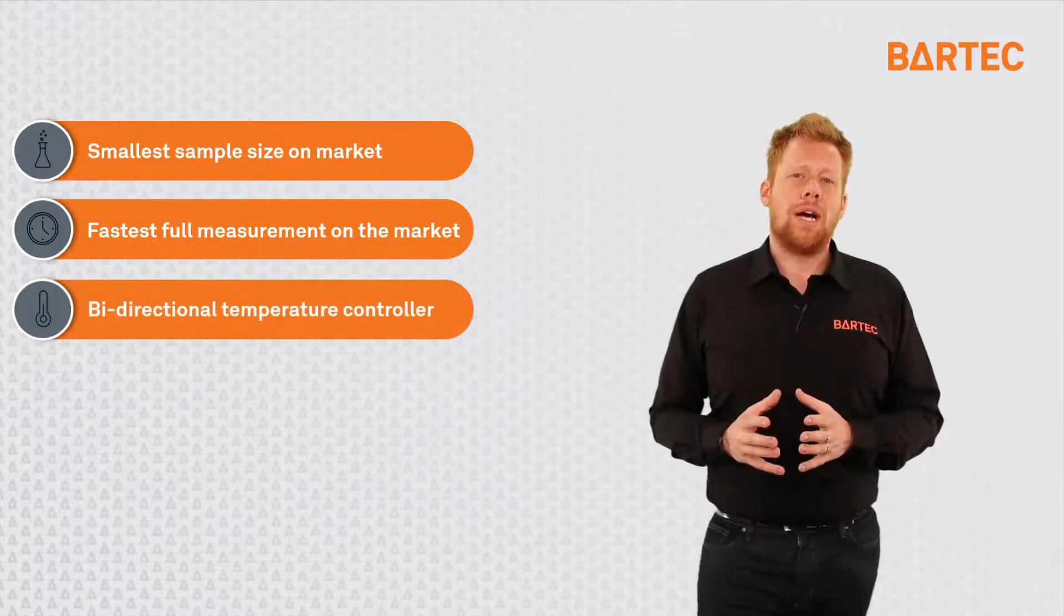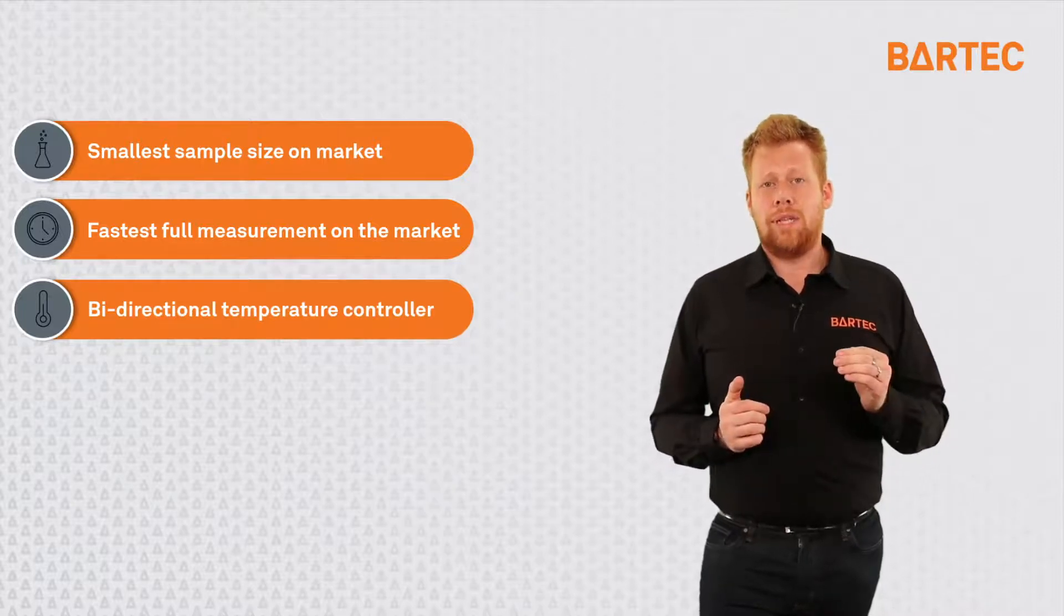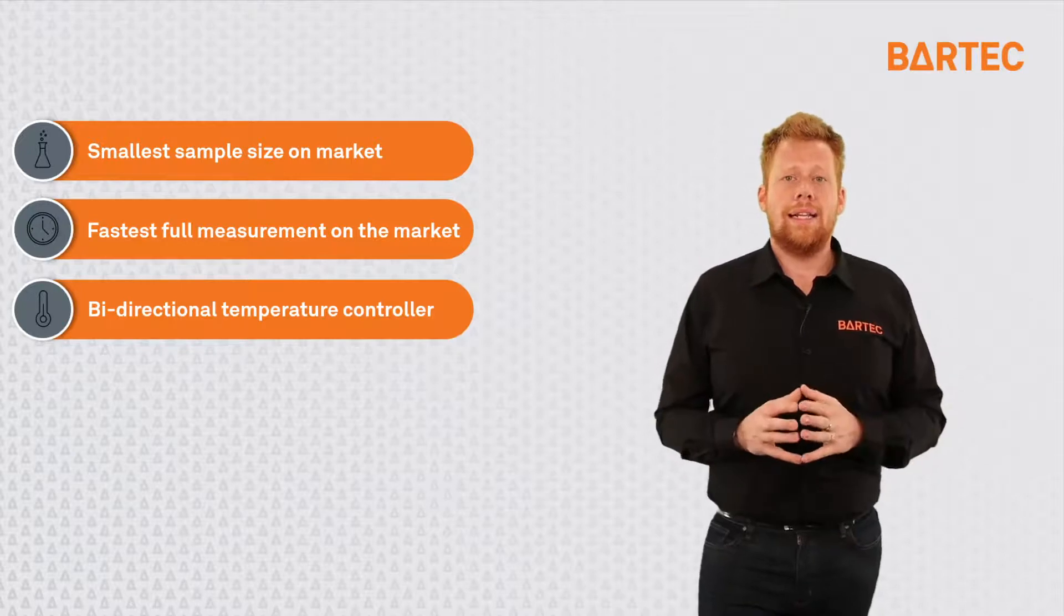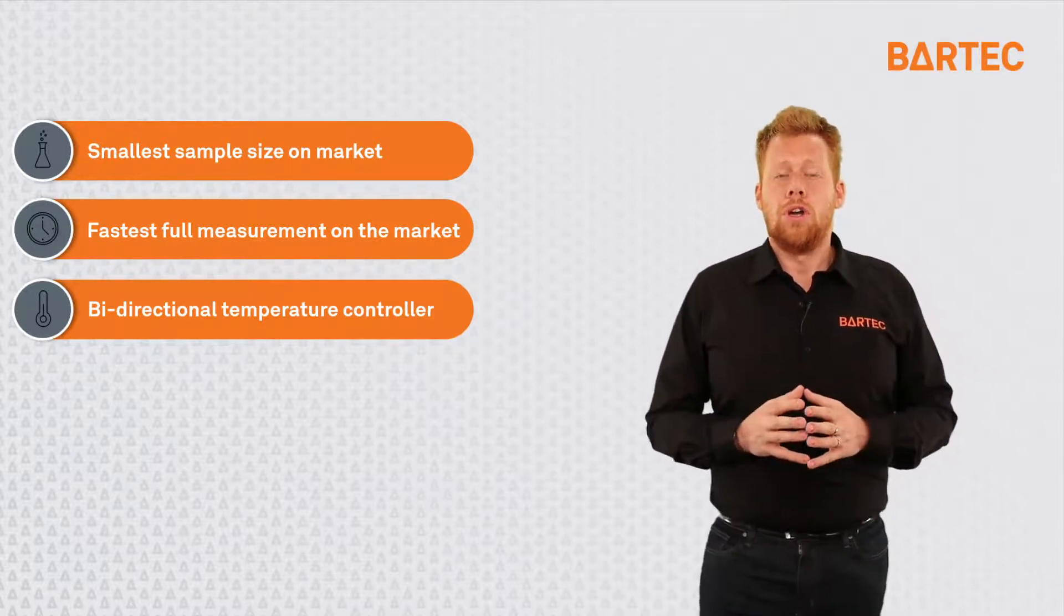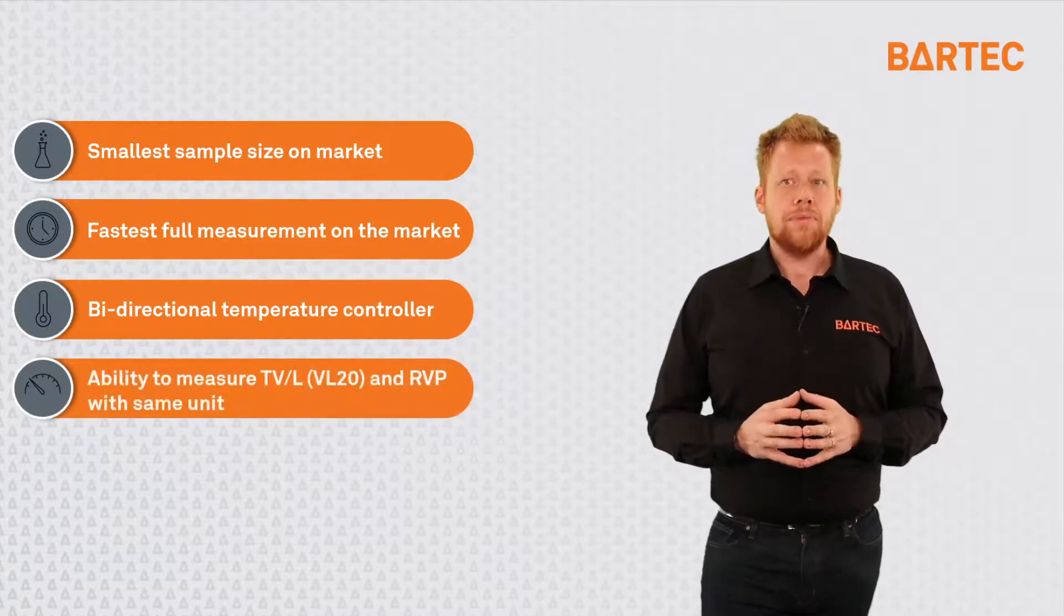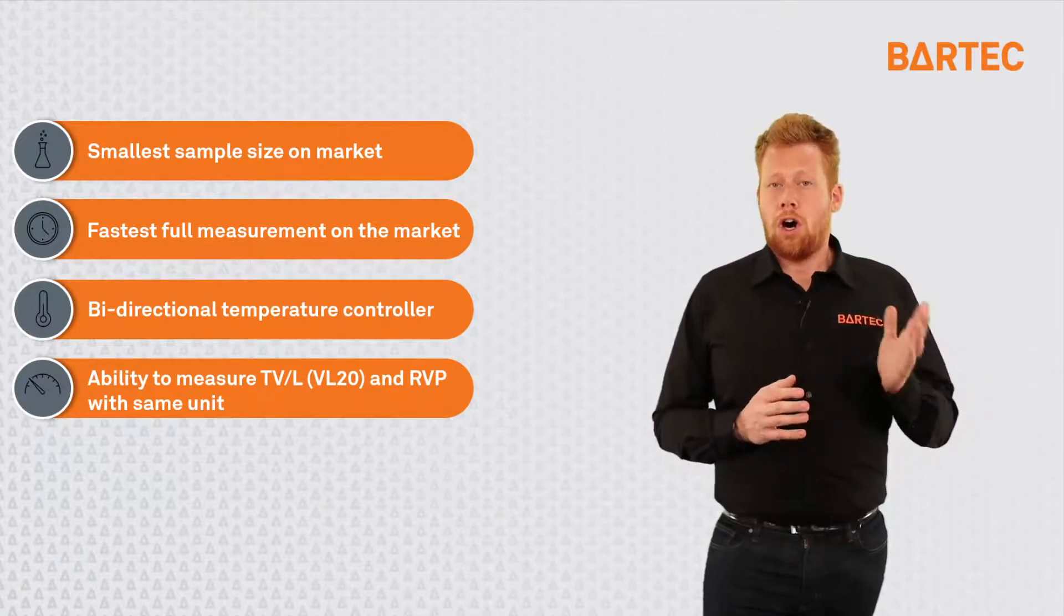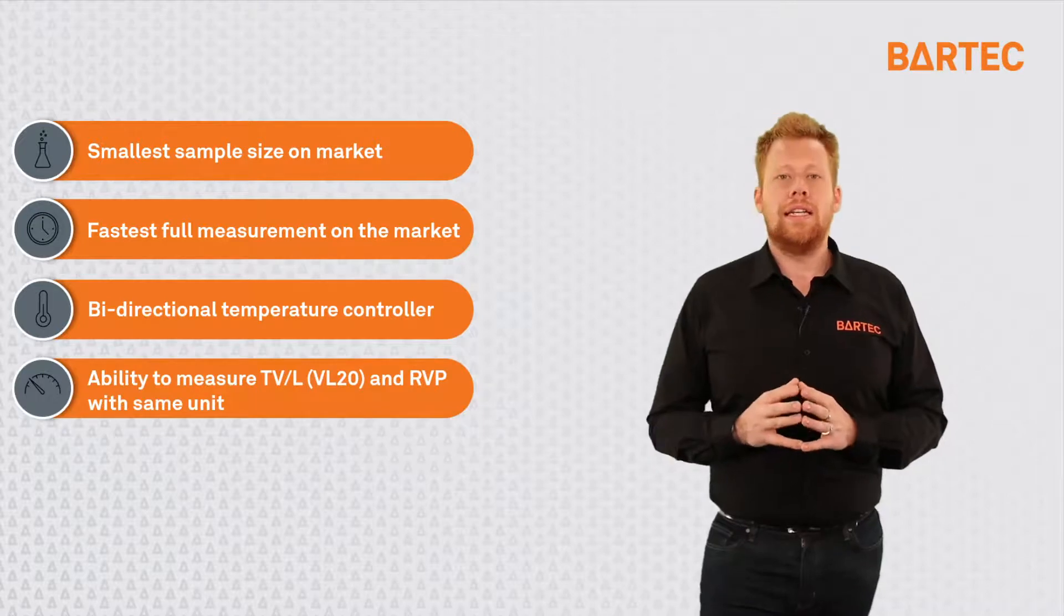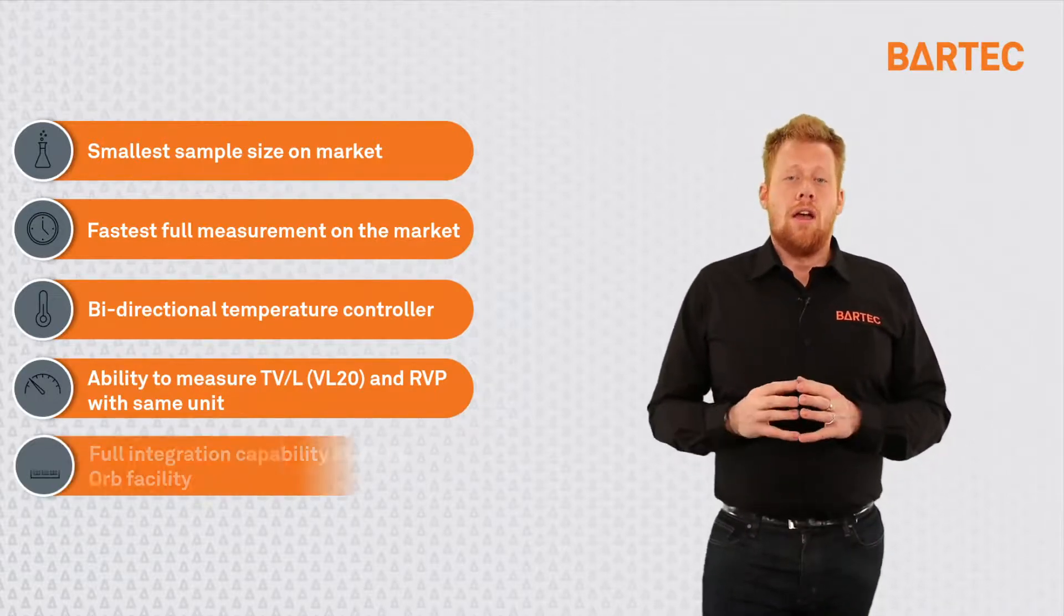The system also has a bi-directional temperature controller. This means that the sample can come hotter or cooler than the RVP and the analyzer will take care of modifying the temperature in order to do the RVP measurement at 100 degrees Fahrenheit. The system also has the ability to do a dual measurement, RVP and TV over L, more specifically VL20, thus combining two analyzers in one.